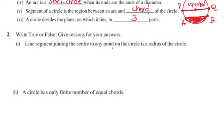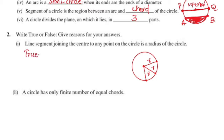First question: Line segment joining the center to any point on the circle is the radius of the circle. If you join the center of the circle to any point on the circle, it gives the radius. The answer is true. The reason: all points on the circle are equidistant from the center of the circle, and this equal distance is called the radius of the circle.